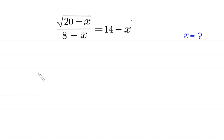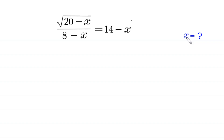Hello everyone, welcome. We will solve this radical equation: the square root of (20 minus x) over (8 minus x) is equal to 14 minus x. Our job is to find all possible values of x.